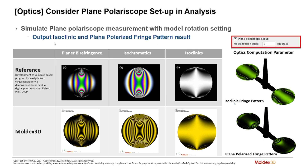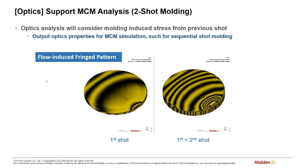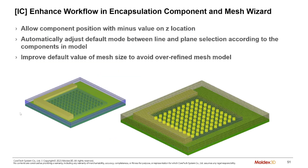For optics, instead of using a single polarized light direction, we now allow you to consider a polariscope setup with a rotation angle, which is more synonymous with the measurement tool used in typical optics evaluation. MCM analysis is now implemented for optics as well, allowing you to see the difference between the first and second shot optics. We've also made an enhancement to the encapsulation module — the mesh wizard has been improved to give a lower overall mesh element count and allows more diverse components.